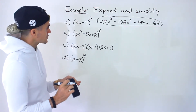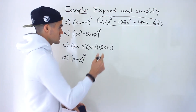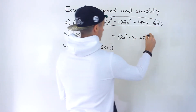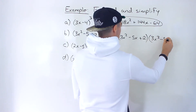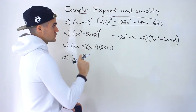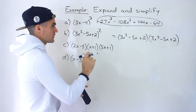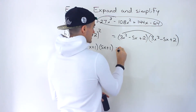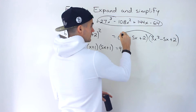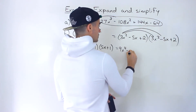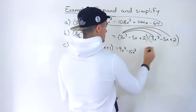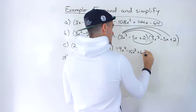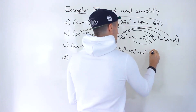Moving on to part b, we've got 3x squared minus 5x plus 2 — a quadratic in brackets to the power of 2. Same thing: I'm going to rewrite it as two brackets multiplying by each other. We have to multiply all terms together carefully. 3x squared times 3x squared gives 9x to the power of 4. 3x squared times negative 5x gives minus 15x cubed. 3x squared times 2 gives 6x squared. Then negative 5x times 3x squared gives another negative 15x cubed.